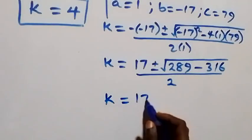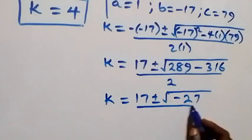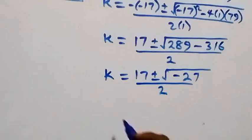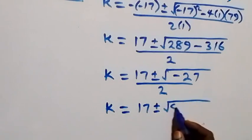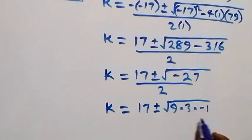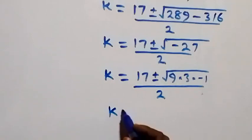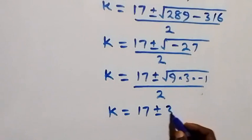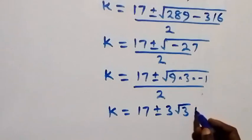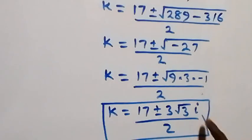This gives k equals 17 plus or minus the square root of 289 minus 316, which is minus 27, over 2. Simplifying, k equals 17 plus or minus the square root of 9 times 3 times minus 1, over 2, which becomes k equals 17 plus or minus 3 root 3 times i, over 2. So we have two complex solutions from this case.